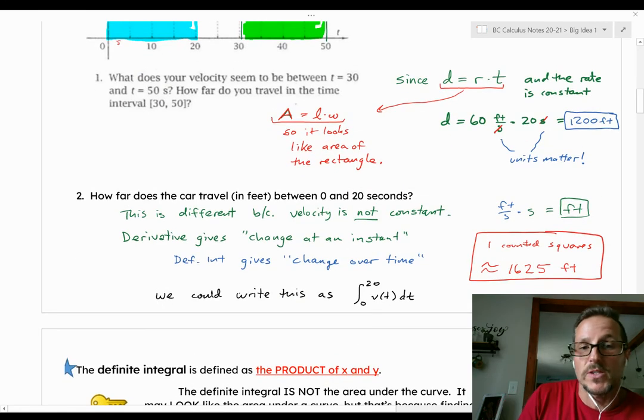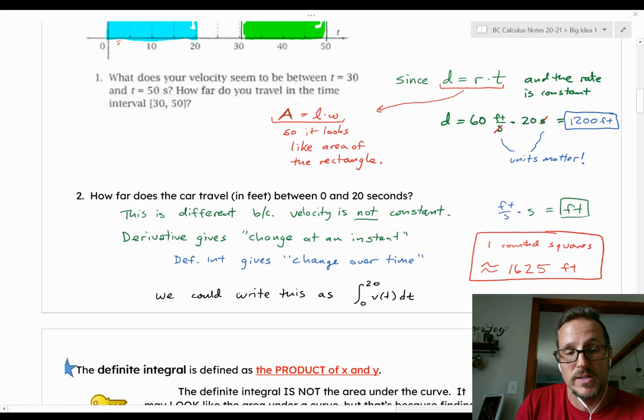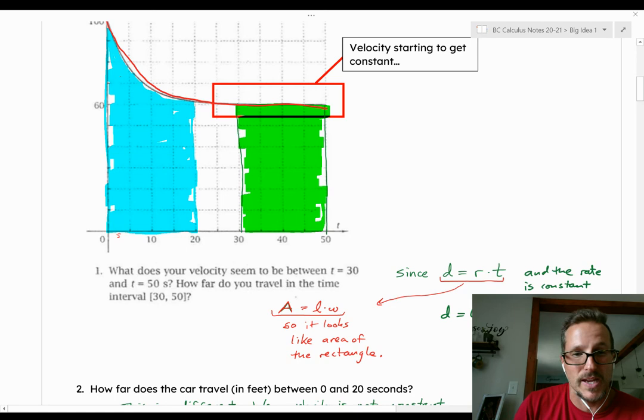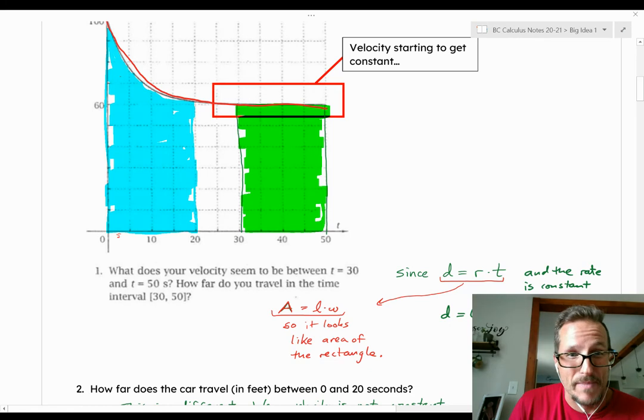So now we want to ask the question, how far does the car travel in feet between 0 and 20 seconds? Again, how far the car travels is going to be a product of the feet per second velocity multiplied by the seconds in time interval. Because feet per second times seconds is feet. Based on the graph, that means we want to find this blue area. Now, the problem with finding this blue area is that unlike the time interval from 30 to 50 seconds, where velocity looked pretty constant, here on 0 to 20 seconds, the velocity is changing. It is decreasing from around 100 feet per second to something a little bit greater than 60 feet per second. As far as what that actual blue area is, I don't know what it is exactly.